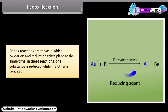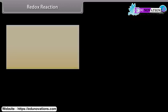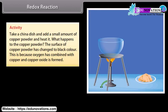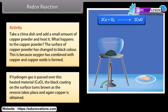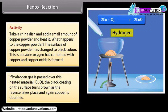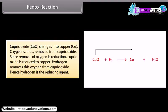Redox reaction. Redox reactions are those in which oxidation and reduction take place at the same time. In these reactions, one substance is reduced while the other is oxidized. Activity: take a china dish and add a small amount of copper powder and heat it. What happens to copper powder? The surface of copper powder has changed to black color. This is because oxygen has combined with copper and copper oxide is formed. If hydrogen gas is passed over this heated material, CuO, the black coating on the surface turns brown as the reverse takes place and again copper is obtained.